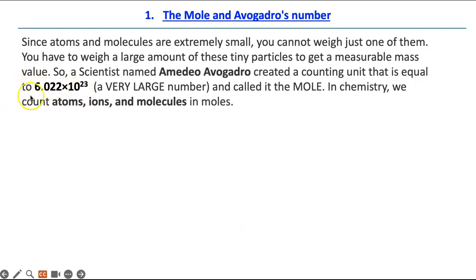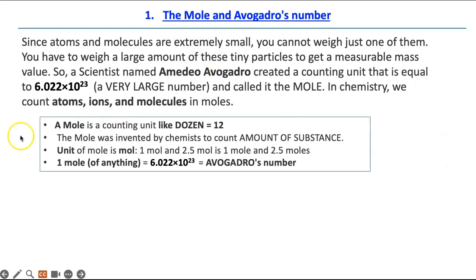In his honor, this value was named Avogadro's number. You can remember Avogadro's number. And here are the main parts of this paragraph. Please write this down. A mole is a counting unit like the dozen. A mole was invented by chemists to count the amount of substance, like amount of students, amount of blackboards, tables, computers, what have you. The unit used to say mole is mol. So if I want to say one mole of something, then I write one mol. And if I write 2.5 moles, then I write 2.5 mol. Remember, we do not add the e when we're using the unit for moles. A mole of anything is 6.022 times 10 to the 23, and that is called Avogadro's number.